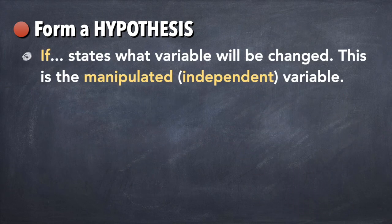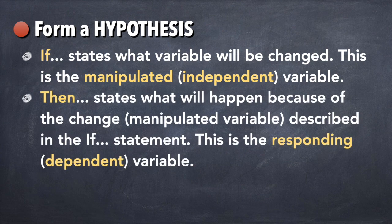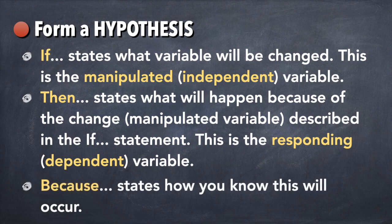If states what variable will be changed. This variable is called the manipulated or independent variable. Then, it states what will happen because of the change or the manipulated variable described in the if statement. This variable is called the responding or dependent variable. And because states how you know this will occur.